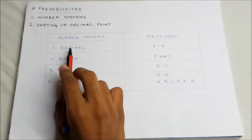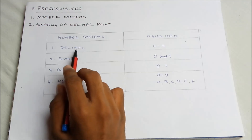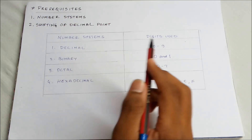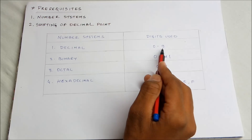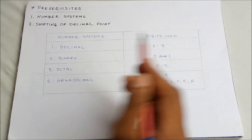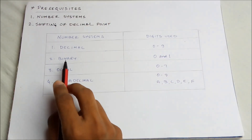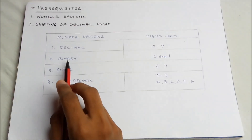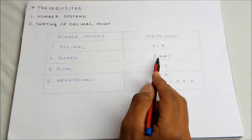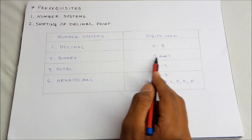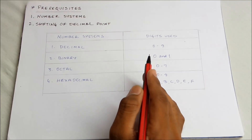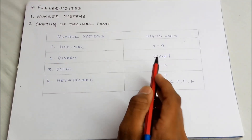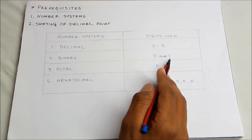The first one is the decimal number system. It contains digits from 0 to 9, so there are totally 10 digits available to represent a number. The next one is binary. It contains only 2 digits, that is 0 and 1, and all numbers in this number system are represented only using 0s and 1s.